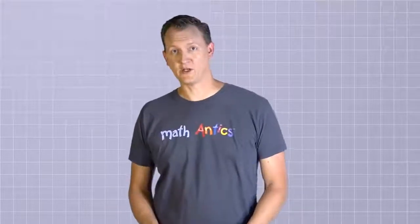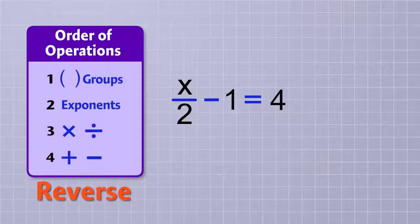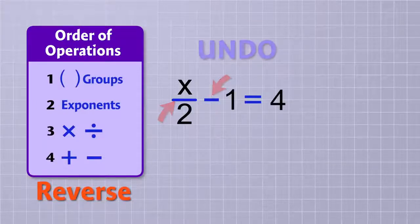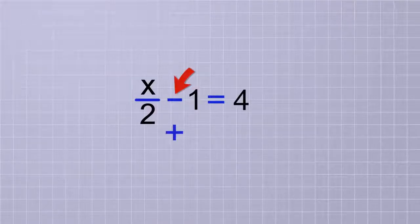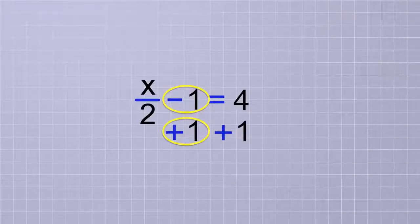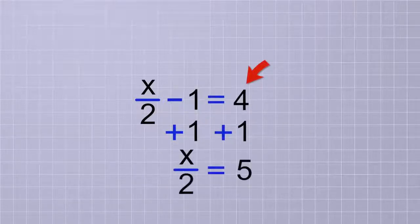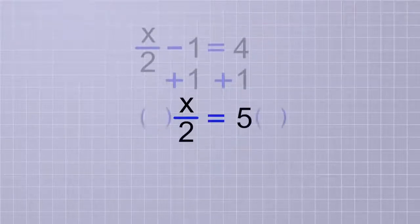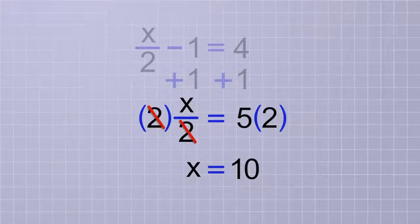Let's try solving another simple two-step equation that has division and subtraction in it: x over 2 minus 1 equals 4. Again, we're going to apply the order of operations rules in reverse to undo the subtraction and the division operations. Since we would normally do the subtraction last, we're going to undo it first. To undo the subtraction, we add 1 to both sides. The minus 1 and the plus 1 cancel out, leaving just x over 2. On the other side, we have 4 plus 1, which is 5. Then to undo the divided by 2, we multiply both sides by 2. The 2's cancel, leaving x all by itself. And on the other side, 2 times 5 is 10. So our answer is x equals 10.